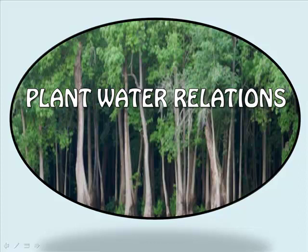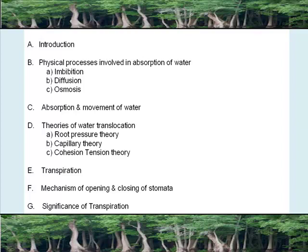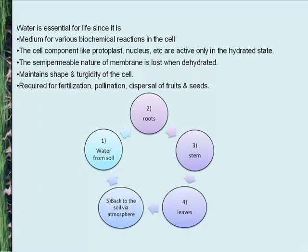Plant-Water Relations. Introduction: the physical processes involved in the absorption of water are imbibition, diffusion and osmosis. Absorption and movement of water. Theories of water translocation are root pressure theory, capillary theory, and cohesion tension theory. Transpiration: mechanism of opening and closing of stomata, and significance of transpiration.